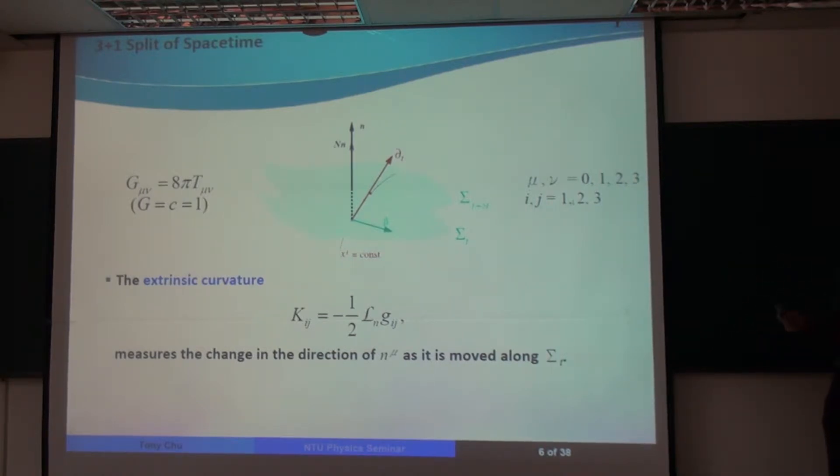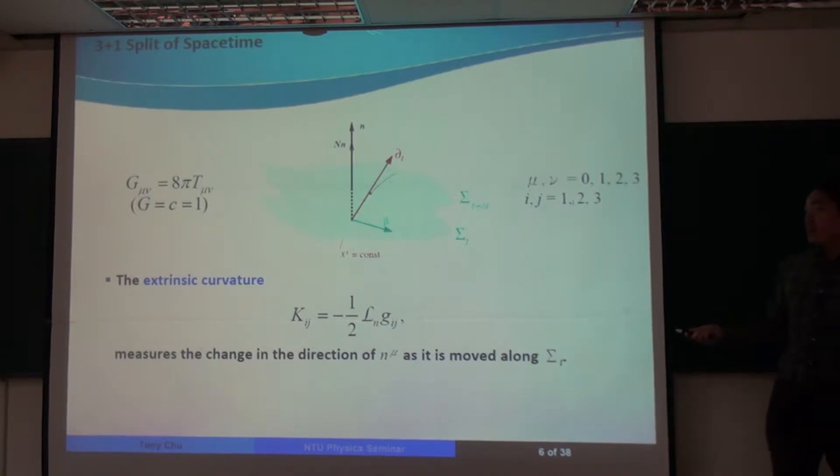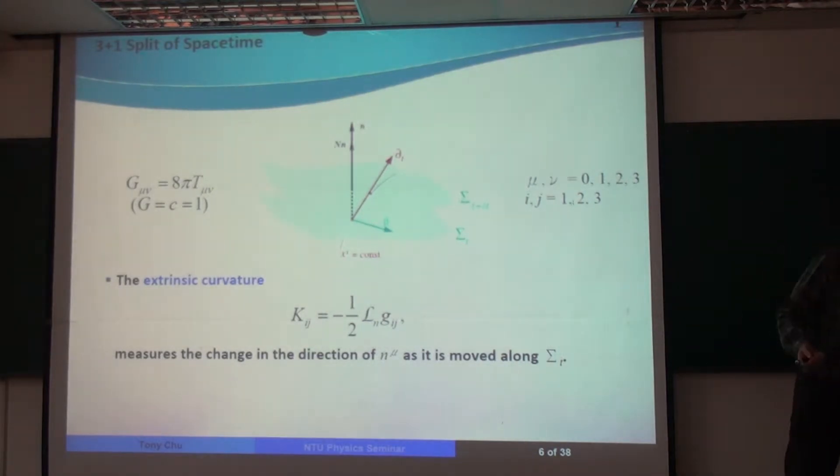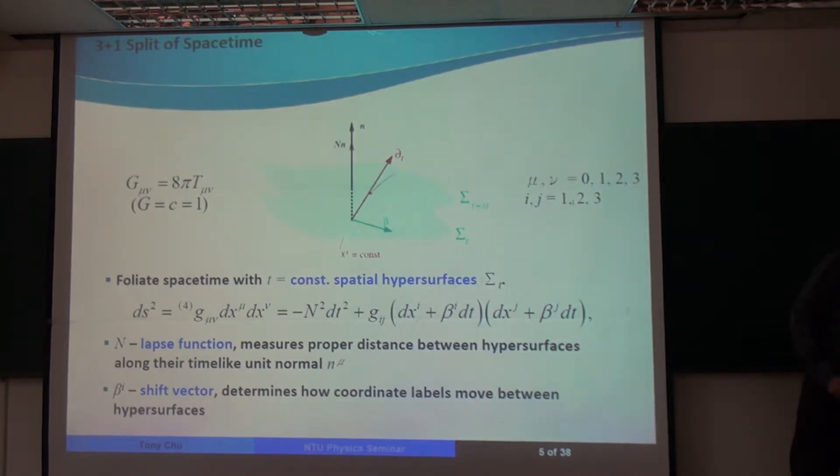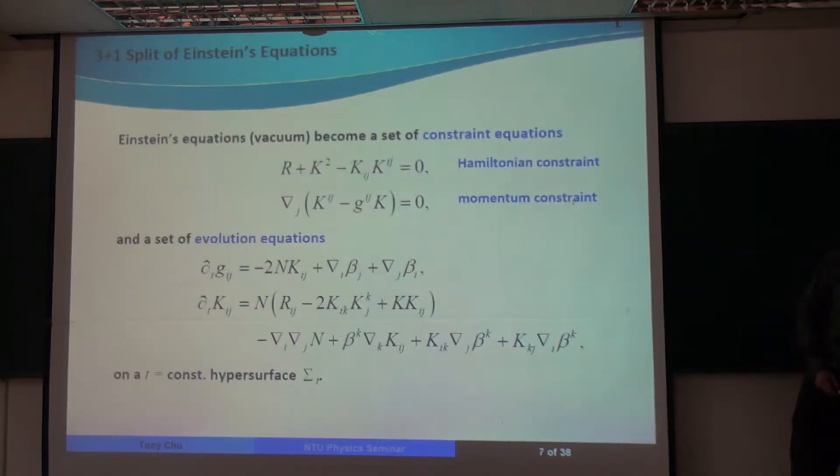The key idea here is that we define this 3 plus 1 split of spacetime with these new quantities. And after we've done that, we can substitute these quantities and the spacetime metric in this form, substitute that into the Einstein's equations. And this is what the Einstein's equations become.